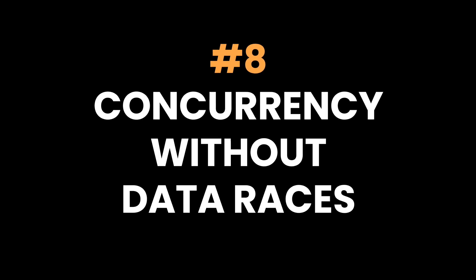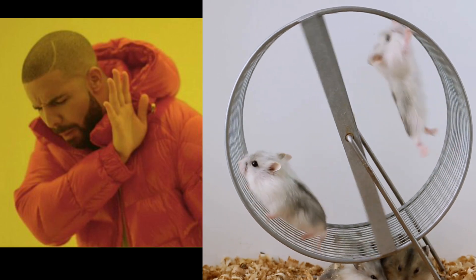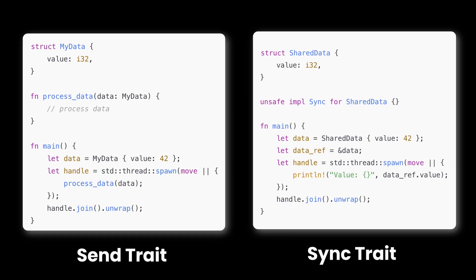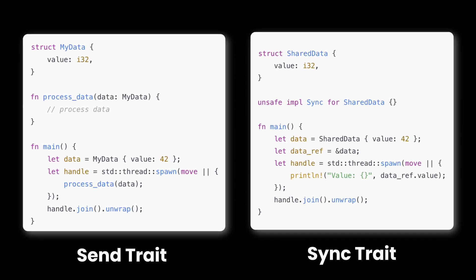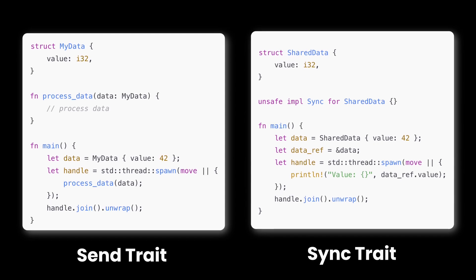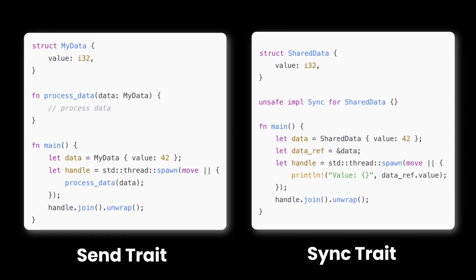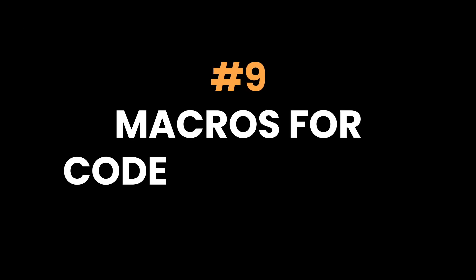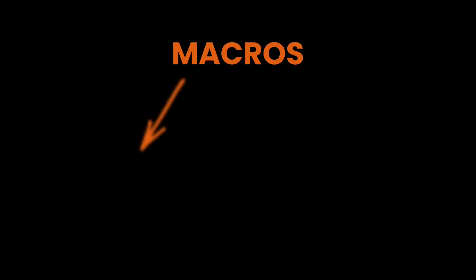Eight: concurrency with data races. Rust makes concurrency safe and sound — data races are simply not allowed. The Rust compiler enforces safe concurrency by requiring Send and Sync traits for thread safety. Rust lets you write highly concurrent programs without worrying about unexpected bugs from data races.